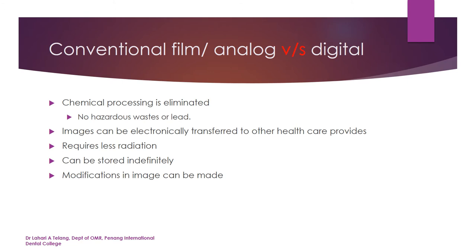The differences between conventional or analog imaging versus digital imaging: first, chemical processing is eliminated, so you don't have hazardous waste to dispose of — no fixer and developer anymore — and processing time is cut. Images can be electronically transferred to other healthcare providers, which is a huge advantage. You wouldn't have to worry about carrying films physically or duplicating them. All you do now is email the image to the next healthcare provider.